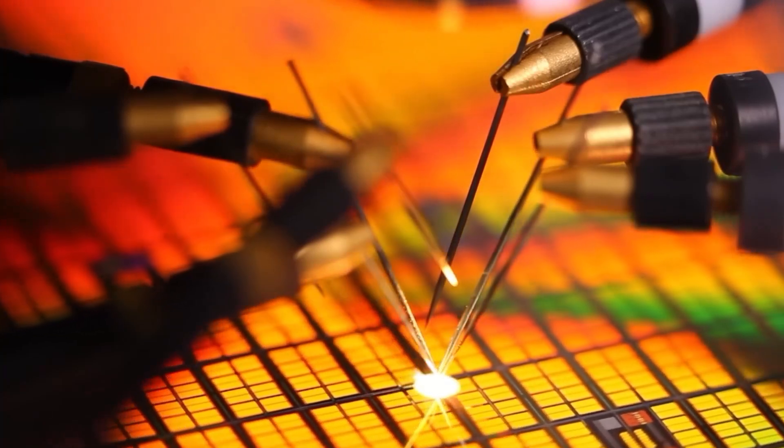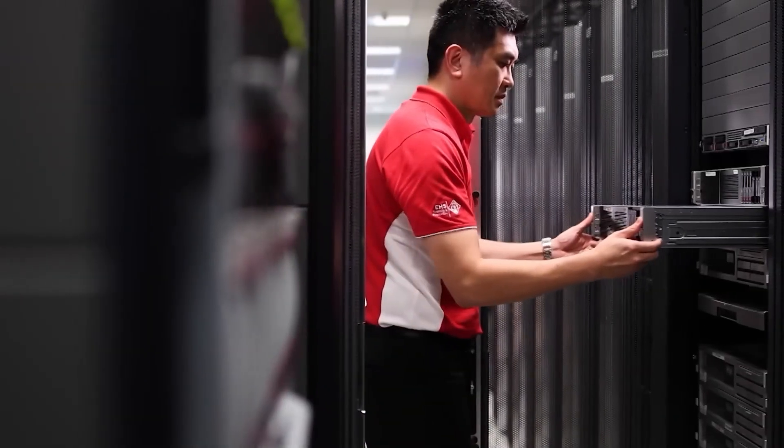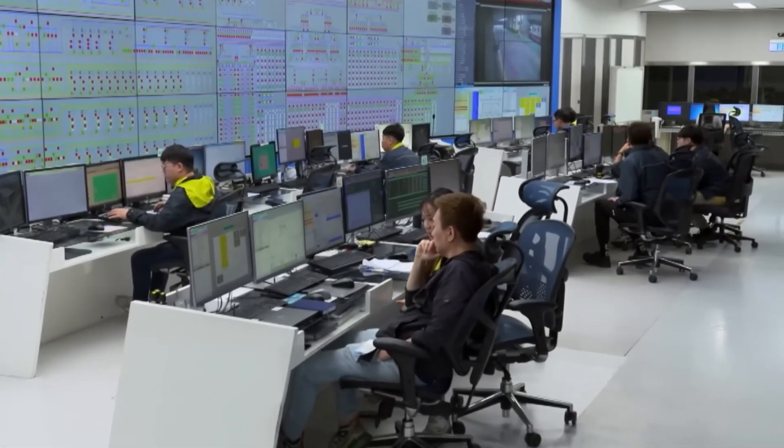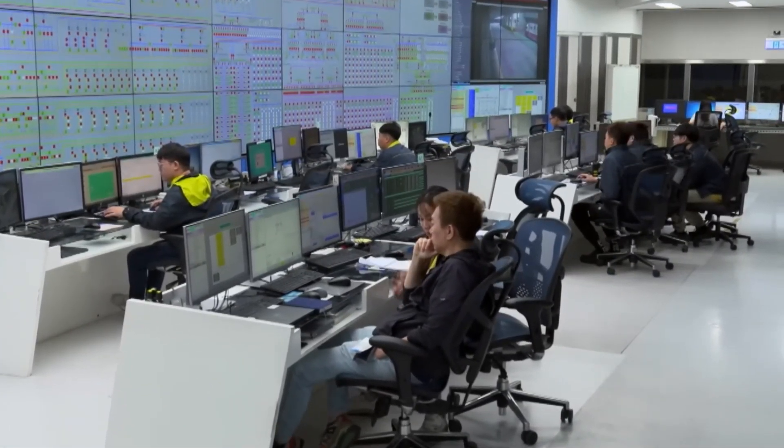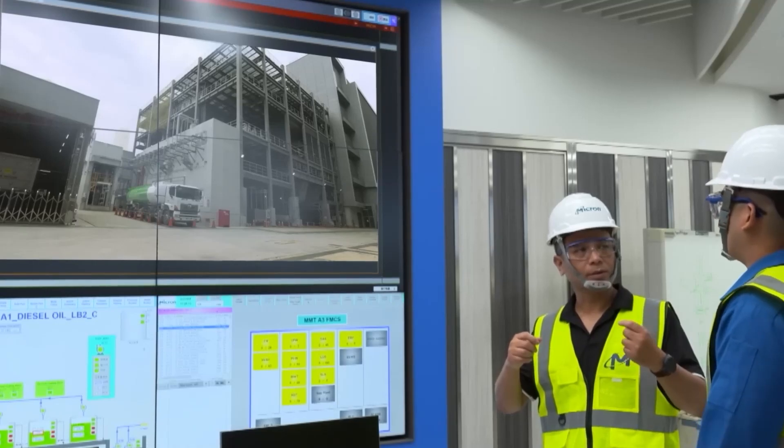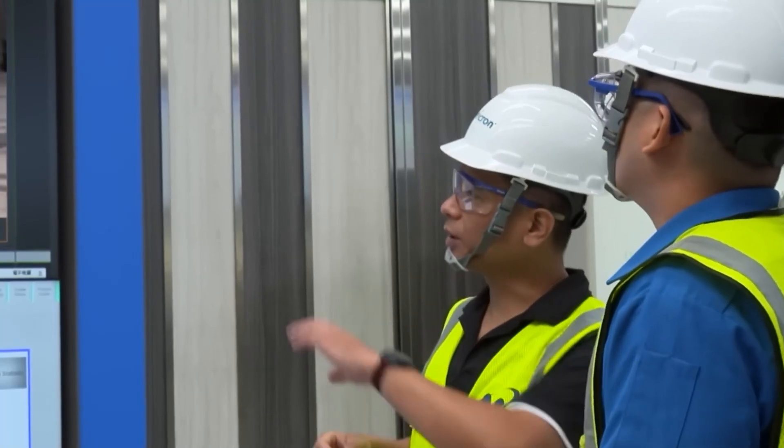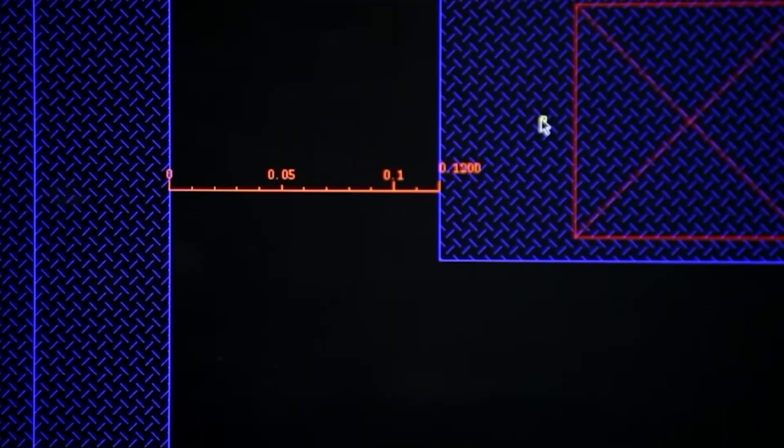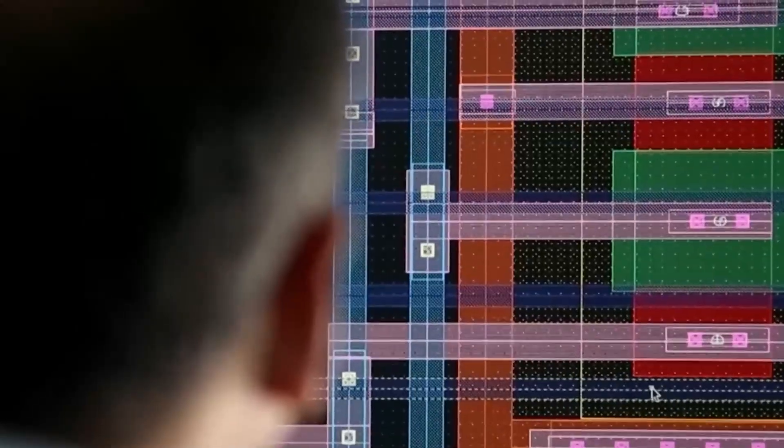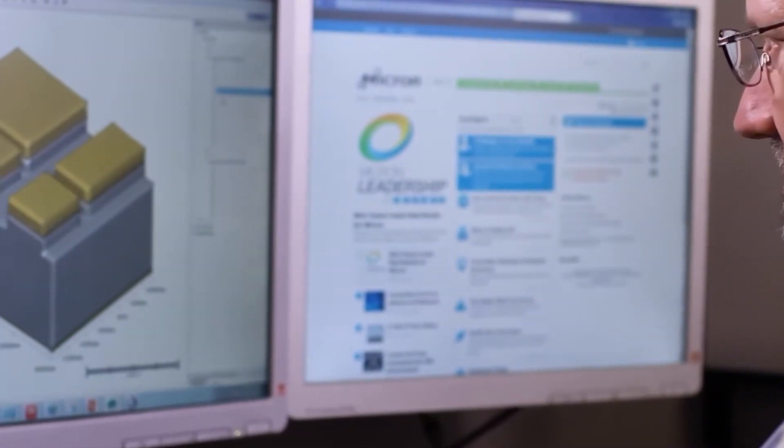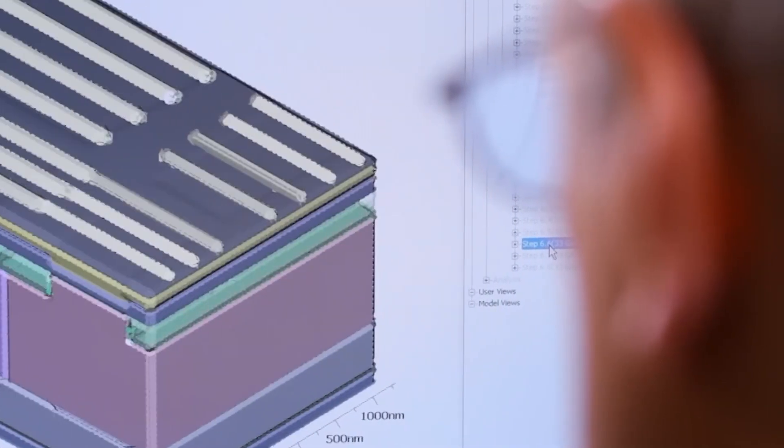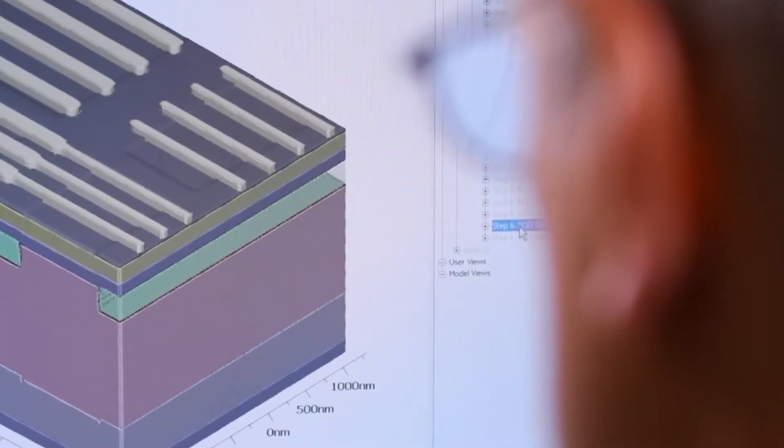Once assembled, the chips face a battery of rigorous tests. NVIDIA employs high-end automated testers that mimic the real-world conditions these GPUs will encounter. From stress tests that simulate gaming environments to benchmarks designed to push AI computations to their limits, every chip is tested to ensure it performs flawlessly. These tests are comprehensive and unforgiving. Any chip that falls below NVIDIA's exacting standards is immediately flagged and filtered out.